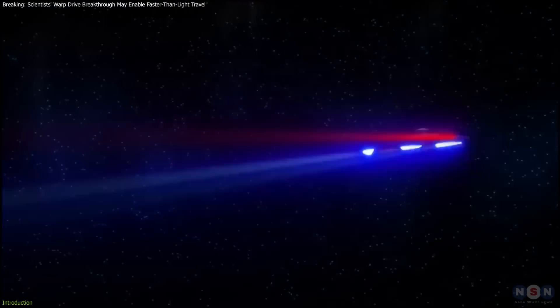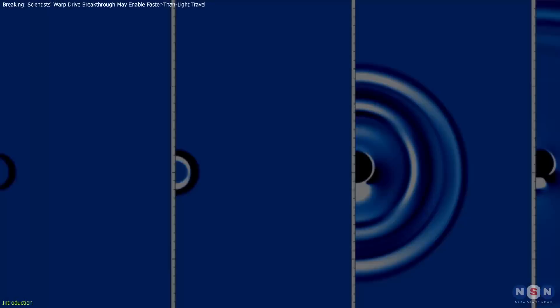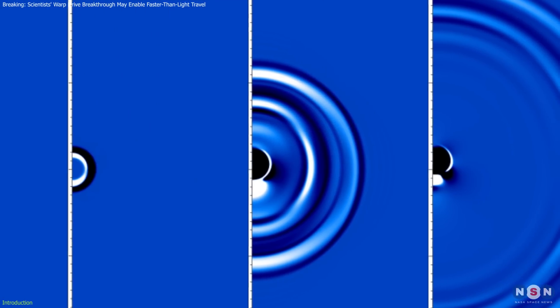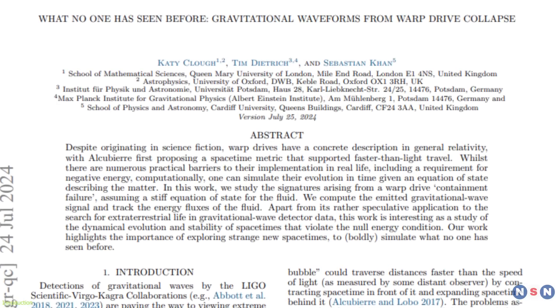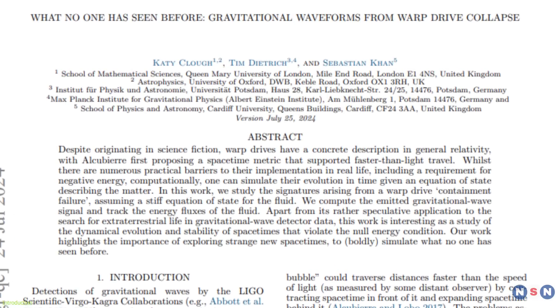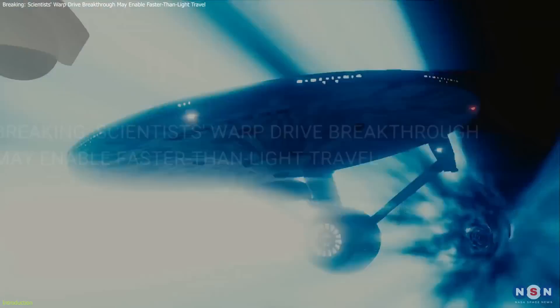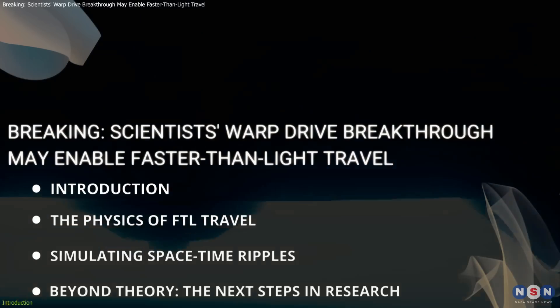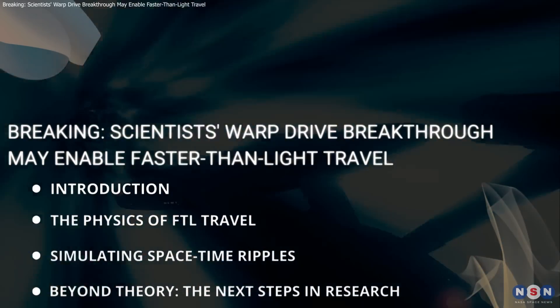Traveling faster than light by bending spacetime isn't just science fiction anymore. Researchers from Queen Mary University of London and other institutions have simulated the gravitational waves that a failing warp drive might emit. This study bridges the gap between fantasy and theoretical physics, offering insights that could transform our understanding of the universe. In this video, we will delve into the complexities of warp drives, explore groundbreaking research, and discuss the profound implications of these findings.